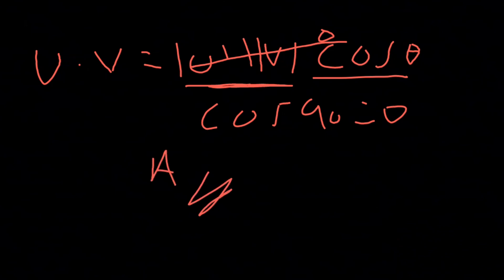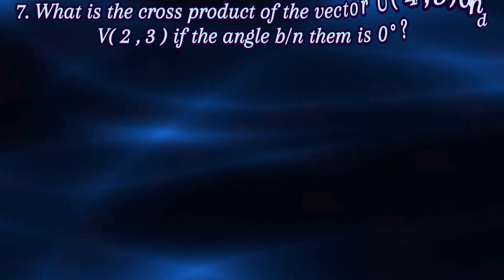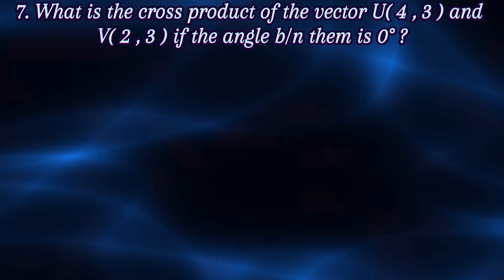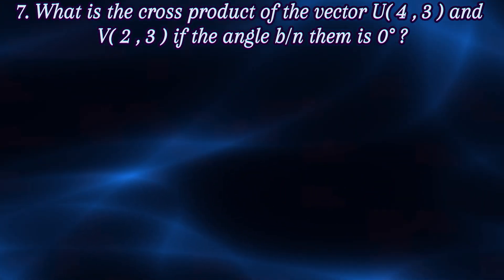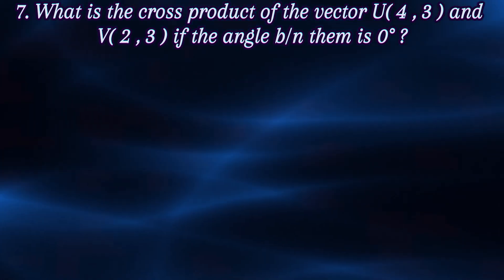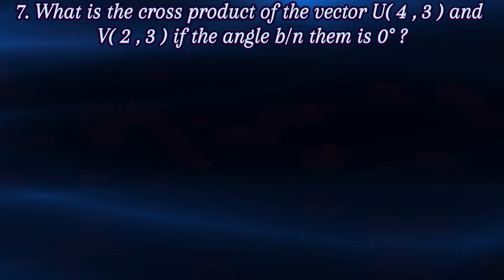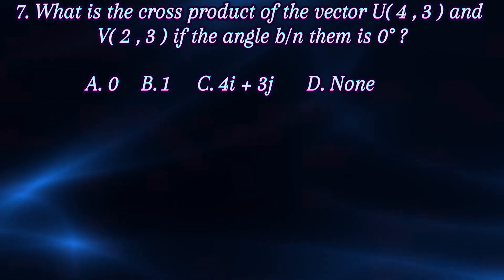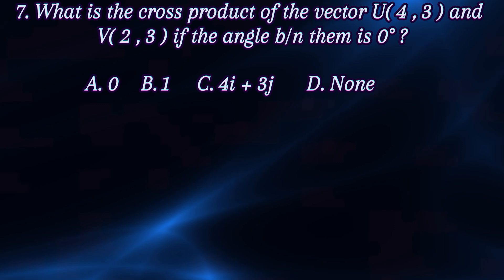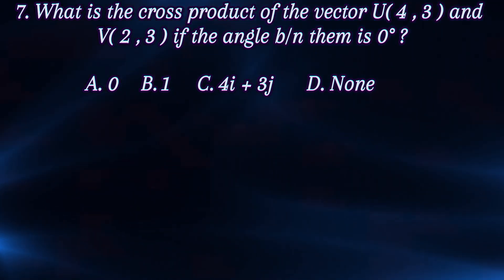What is the cross product of vector u (4,3) and v (2,3) if the angle between them is zero degrees? The dot product becomes zero for perpendicular vectors. For the cross product, answer choices are: a) zero, b) 1, c) 4i plus 3j, d) other.